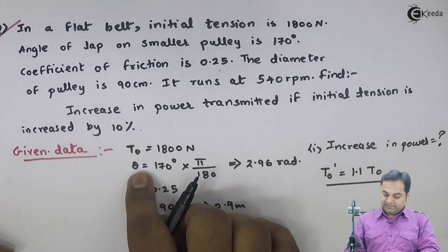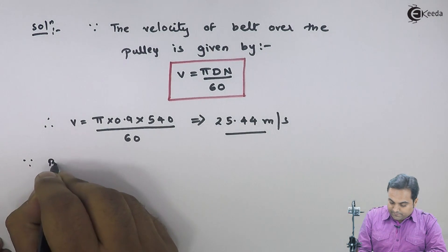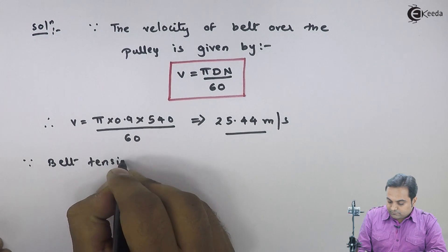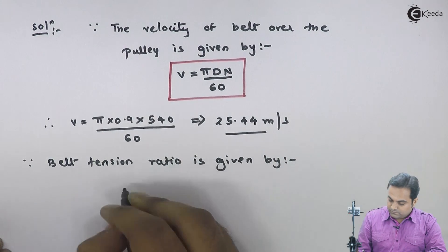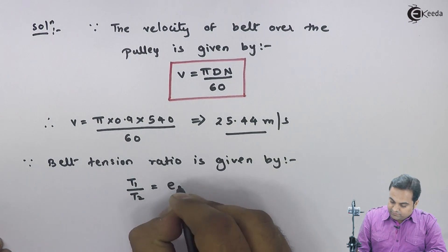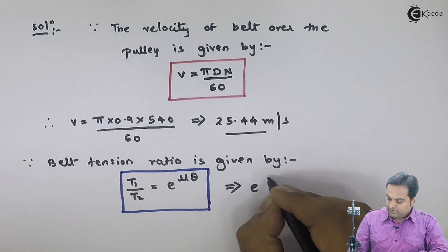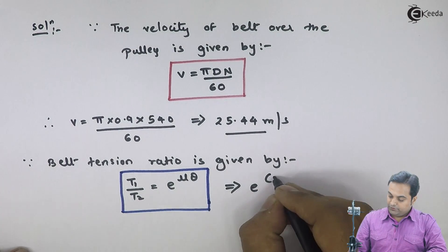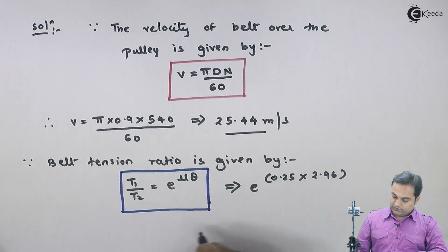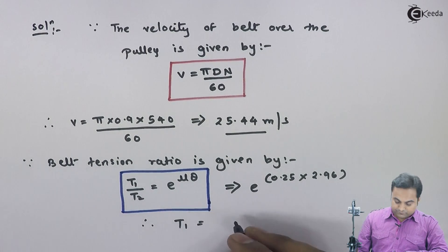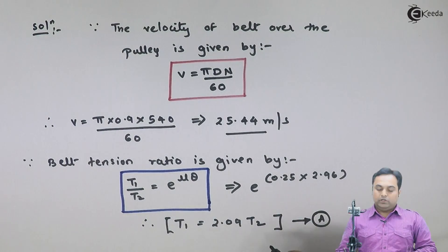Since mu and theta are given, I will calculate the belt tension ratio. The belt tension ratio is given by t1 / t2 = e raised to mu*theta, which is e raised to 0.25 × 2.96. From this I get the relation t1 = 2.09 times t2. I will keep this as equation A.